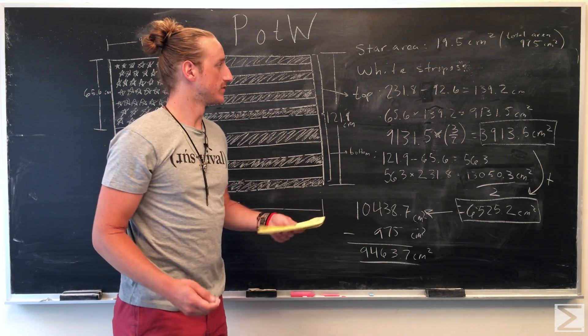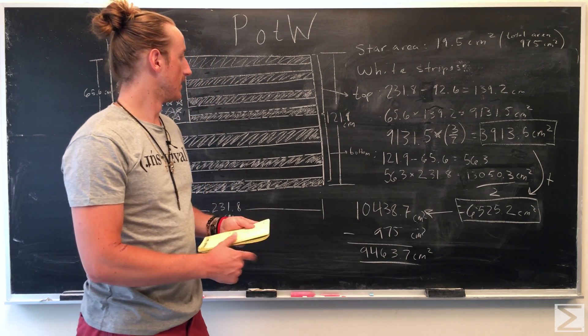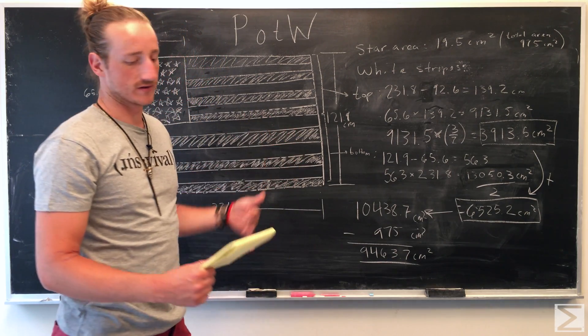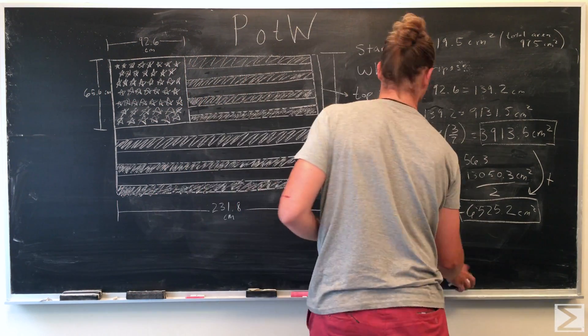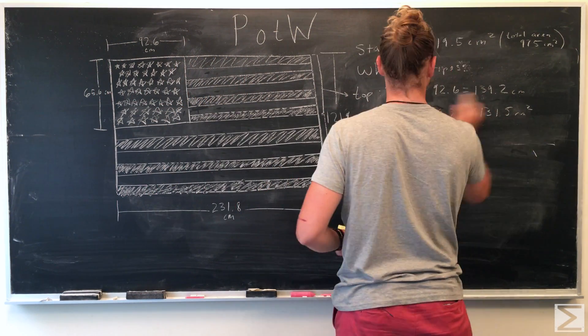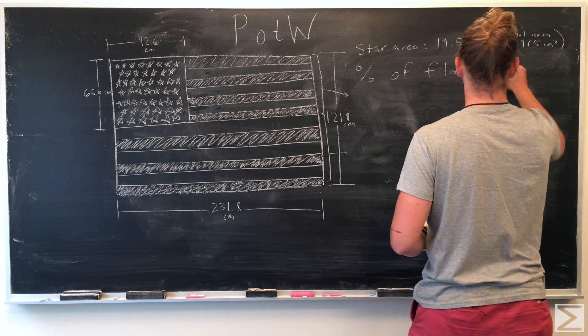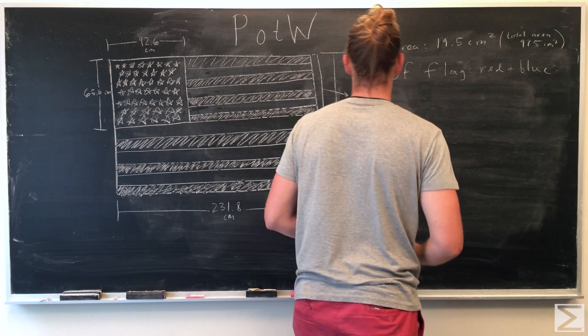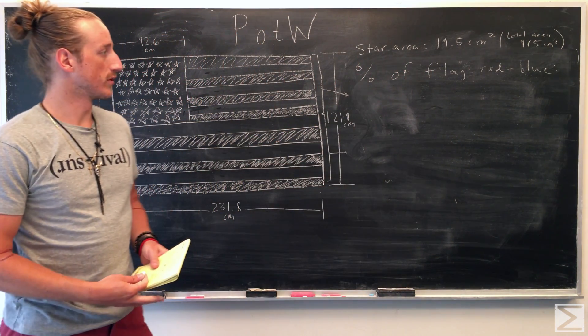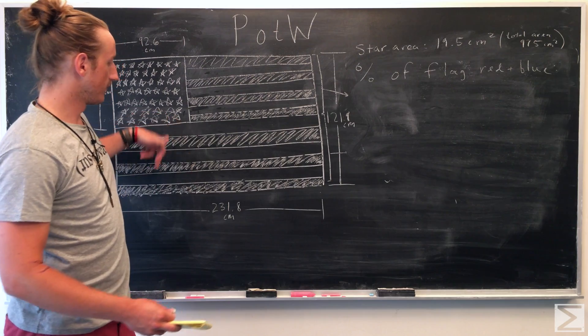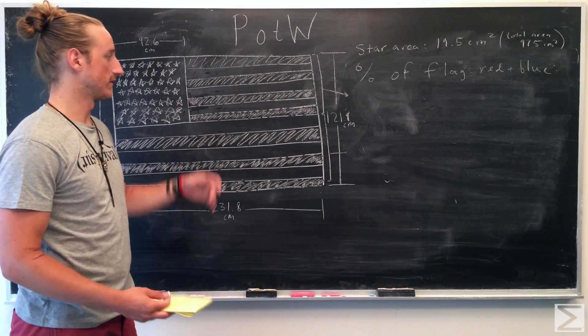The last part of this problem is just to find how much of the flag isn't colored white. So, how much of the flag is red and blue? What percentage of the flag? Looking at the percentage of the flag that's red and blue, we're just going to take the area of the whole flag and then subtract the white stars and the white stripes that we know.